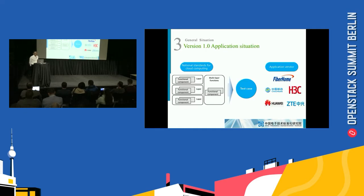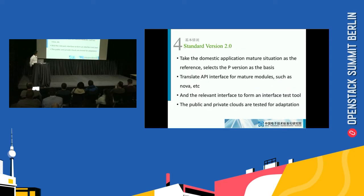Based on our version one standards, we developed test cases. The evaluation vendors include China Mobile, Huawei, and H3C. Based on our practice, we developed a standard version tool. The version tool includes the main domestic application situation as a reference. We selected the Pike version of OpenStack as the basis and translated API interfaces for the relevant modules, such as Nova, Neutron, and others, to form our interface test tools.